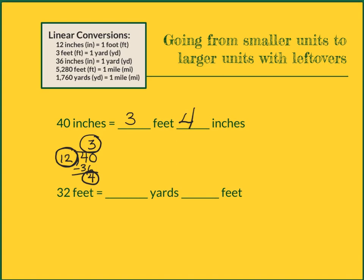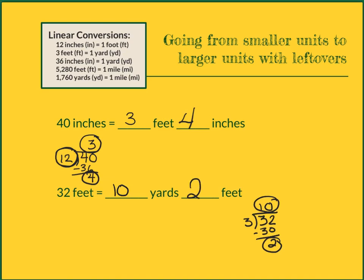Down here, I'm going to be doing the same thing. I'm going from 32 feet to yards. So I would need to divide 32 by 3, because there are 3 feet in each yard. That gives me 10 with a remainder of 2. That means in 32 feet I will have 10 yards that are complete, and my remainder of 2 tells me how many feet I have left over. So my answer would be 10 feet 2 yards.